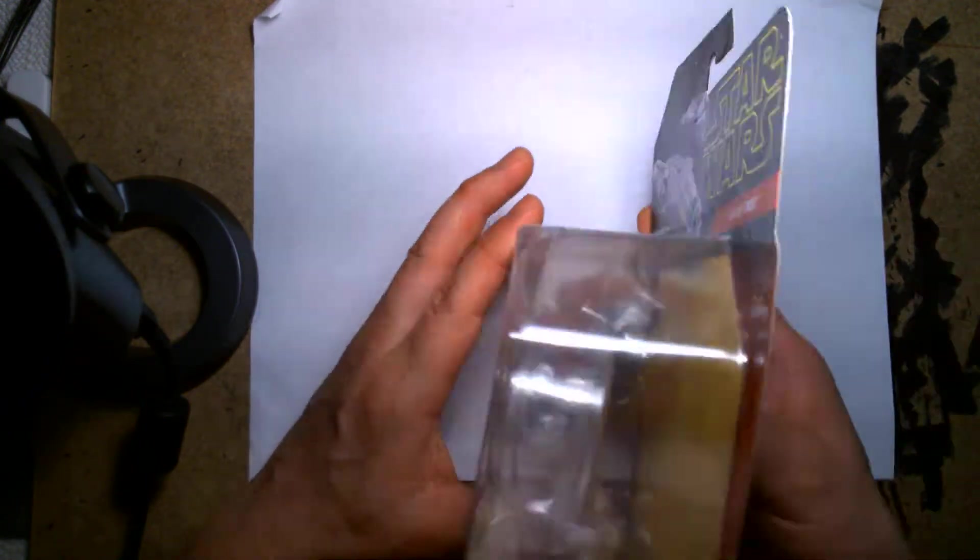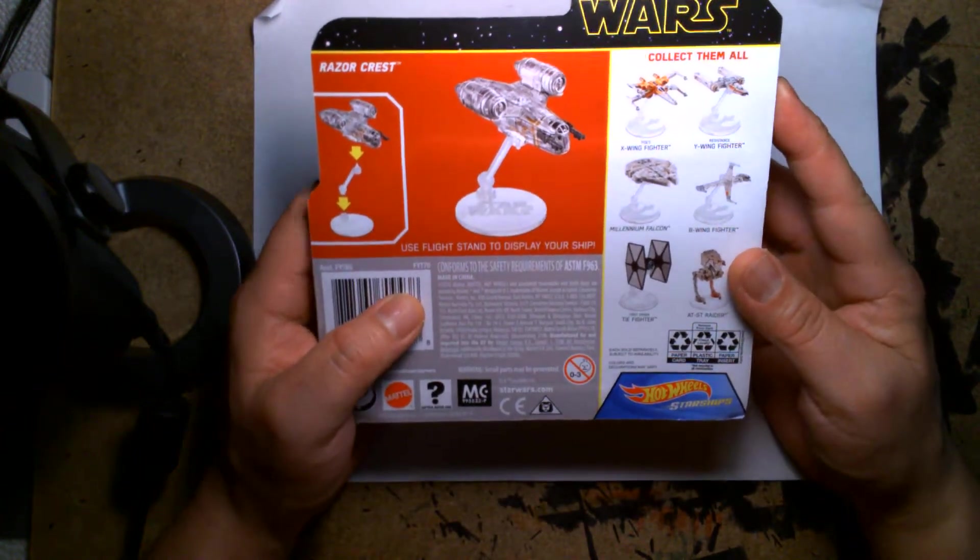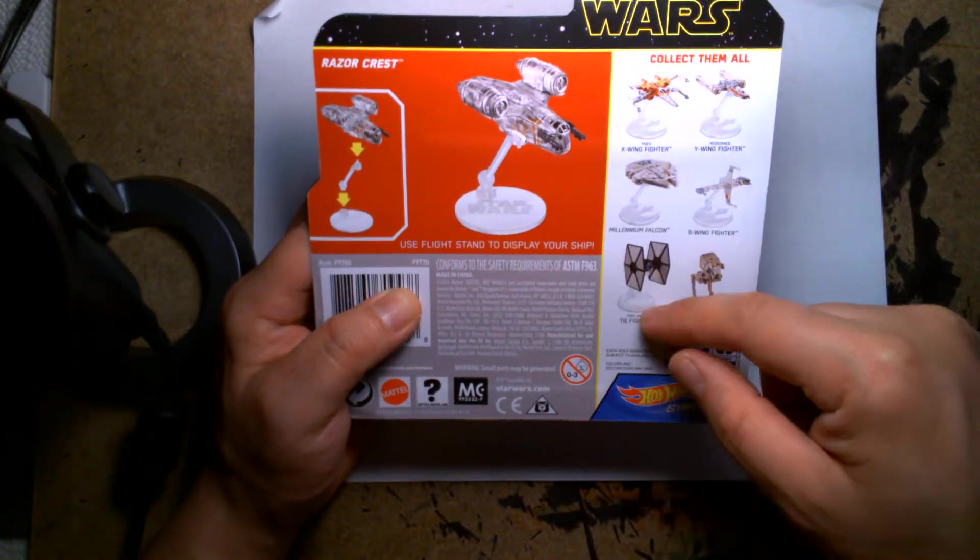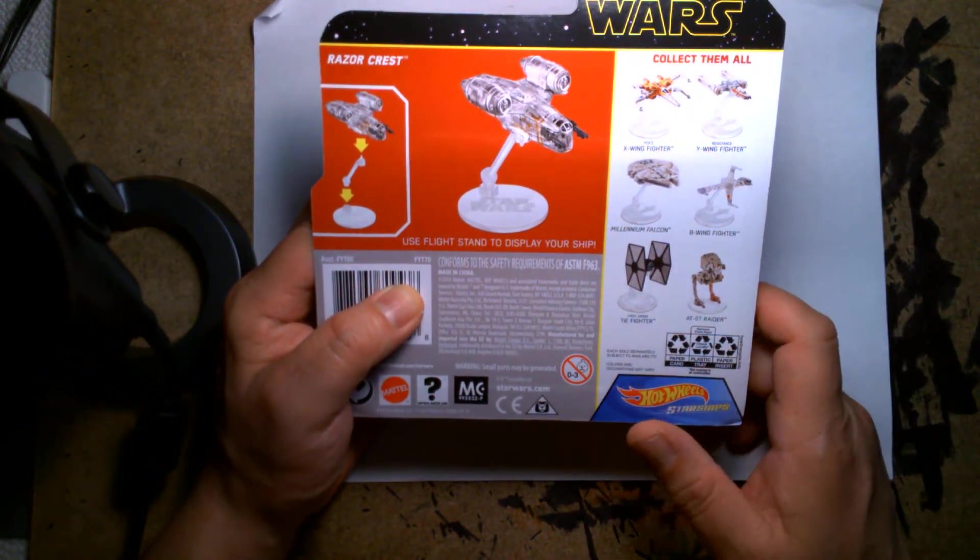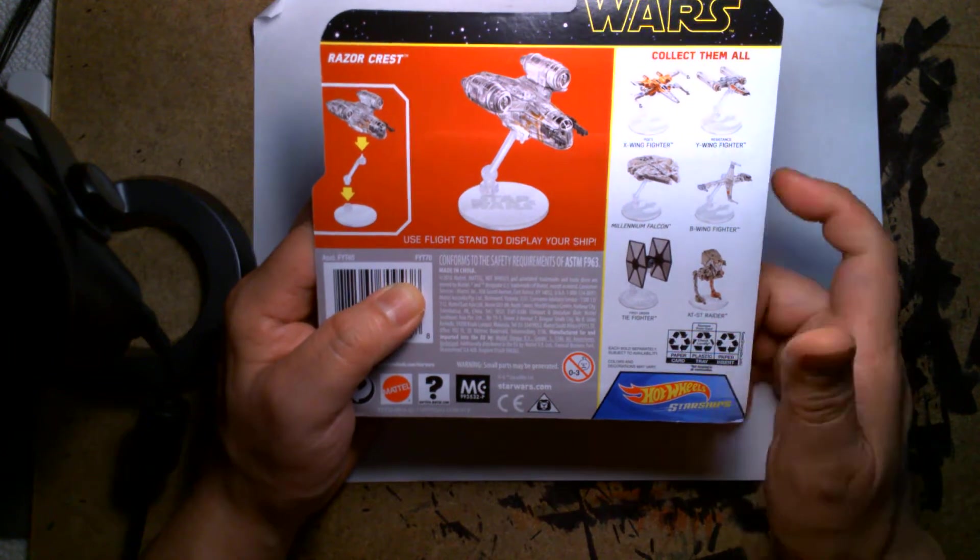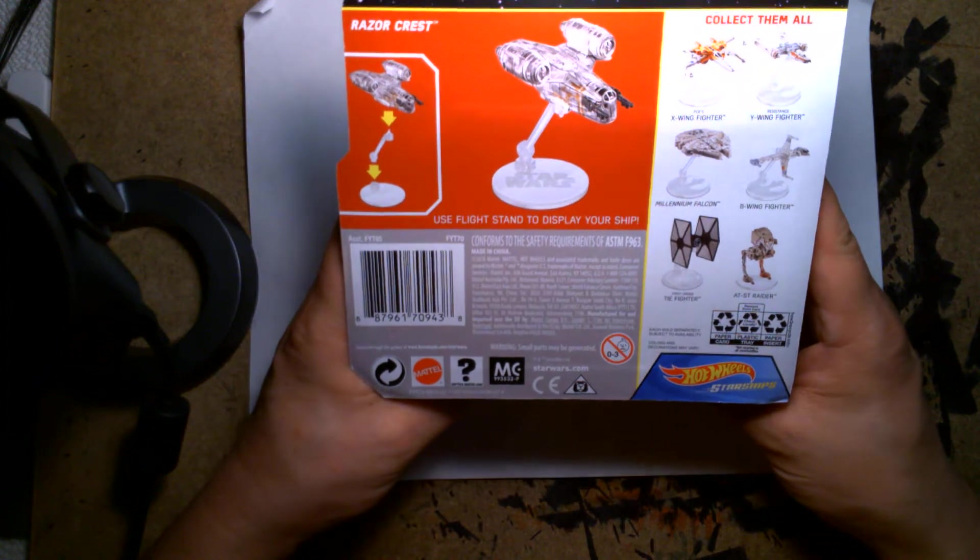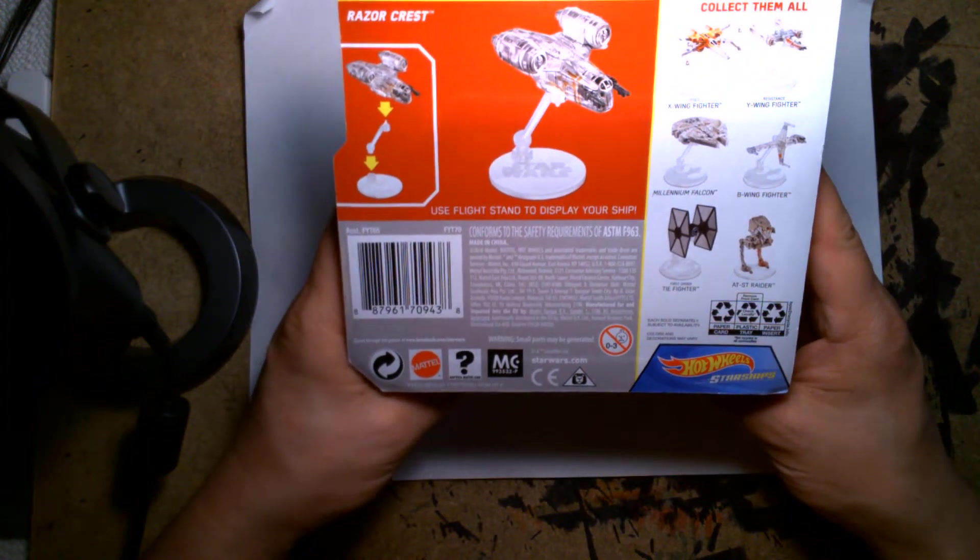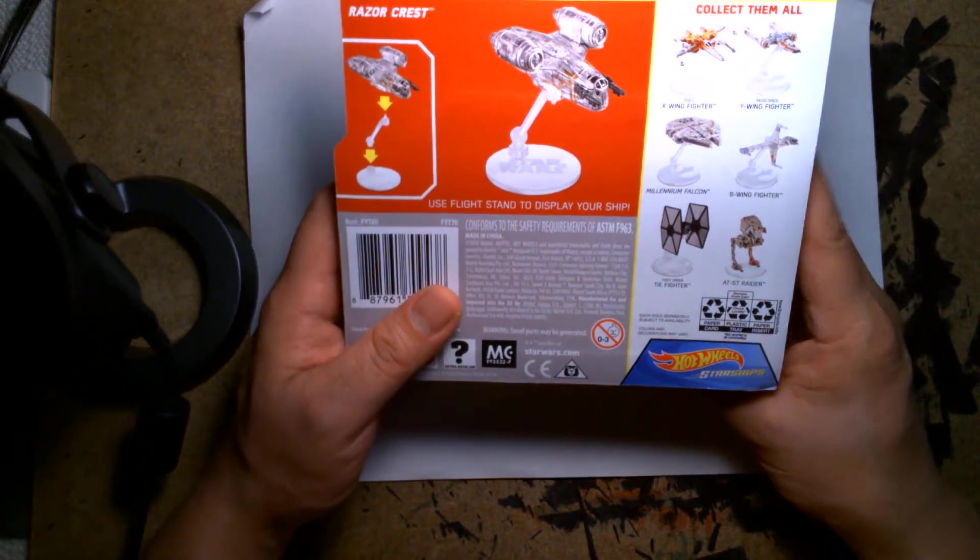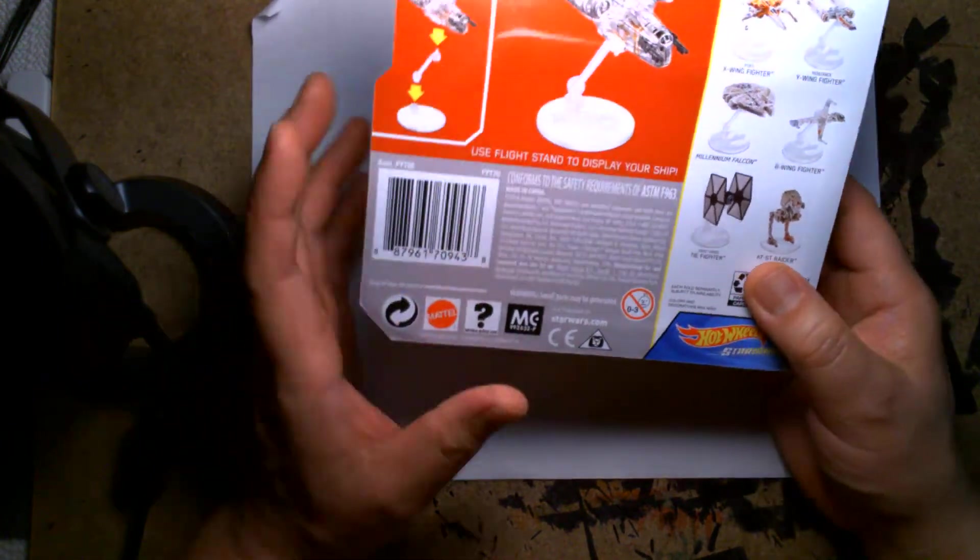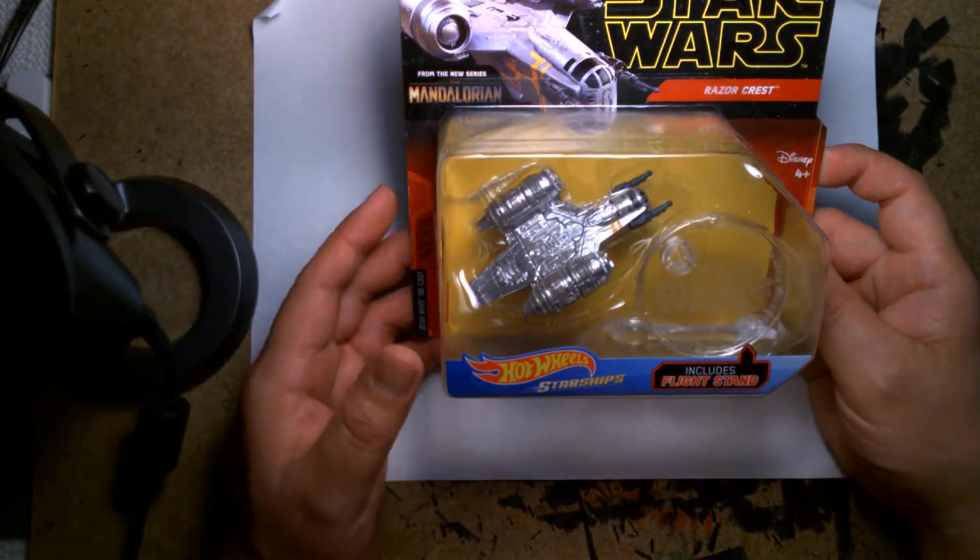It includes the flight stand. If you look on the back, here's some of the other examples of what falls into the line like X-wings, Y-wings, Millennium Falcon, B-Wing, TIE Fighter, AT-ST Raider. It's a fun toy line, especially if you're growing up during the 90s and you collected the Star Wars Micro Machine vehicles. I think this is a wonderful throwback to that, but these are even better because they're actually made of die-cast metal as opposed to that soft weird plastic that the Micro Machines were made of.